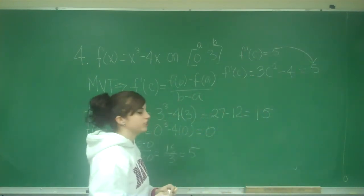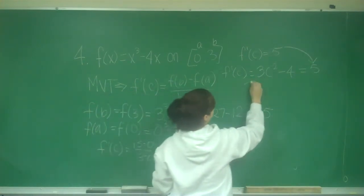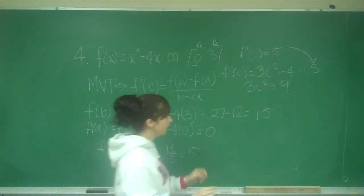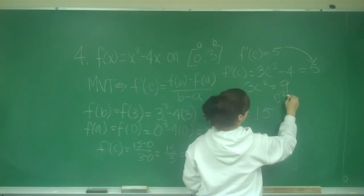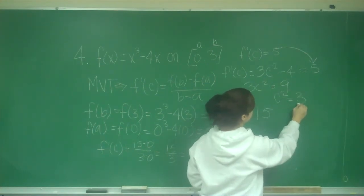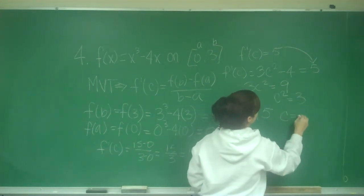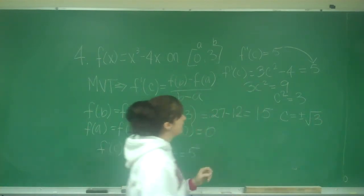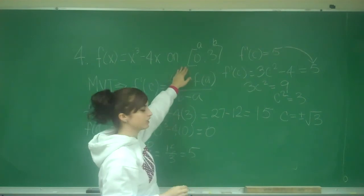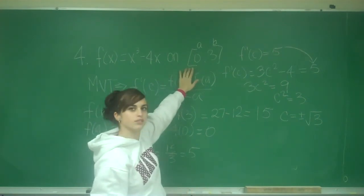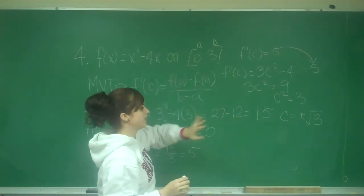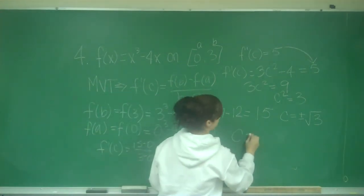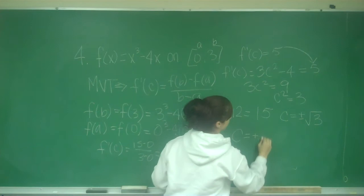Now we just solve. I have 3C squared equals 9. Dividing each side by 3, I have C squared equals 3. Then C equals plus or minus root 3. But I have to look at my interval — negative root 3 is not between 0 and 3, so I can only take the positive value. So C is just going to be positive root 3.